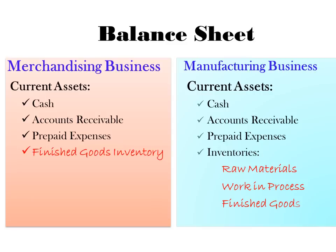To summarize the three types of businesses: service organizations carry no inventory; merchandising businesses carry one inventory — finished goods inventory; and manufacturing businesses carry three inventories — raw materials, work in progress, and finished goods.